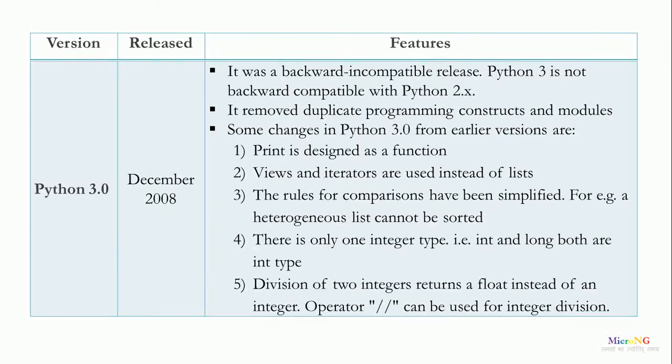The current version of Python is Python 3.0, released in December 2008. It was a backward-incompatible release — Python 3.0 is not backward compatible with Python 2.x and its previous versions. It removed various duplicate programming features, constructs, and modules previously available. Some changes include: the print statement is redesigned as a function rather than a command, and views and iterators are used instead of lists.